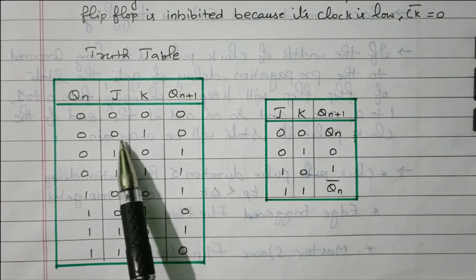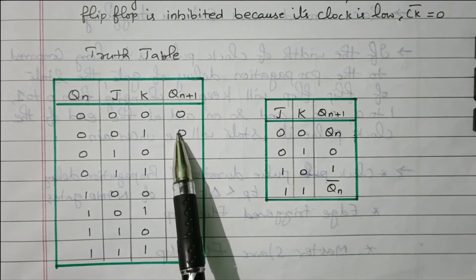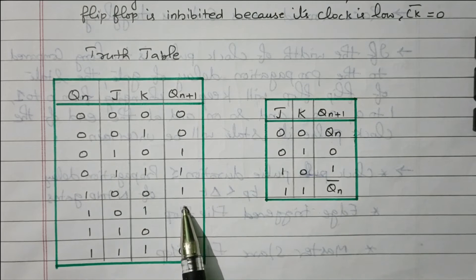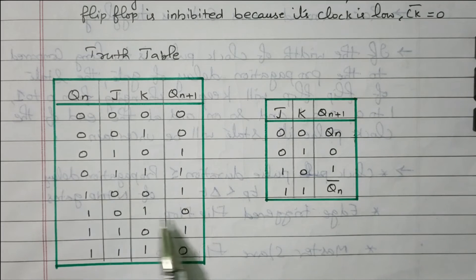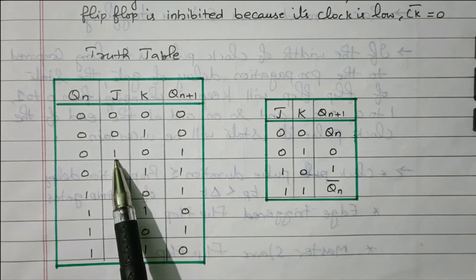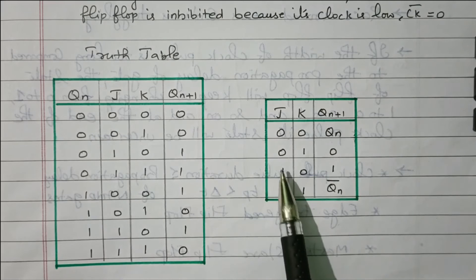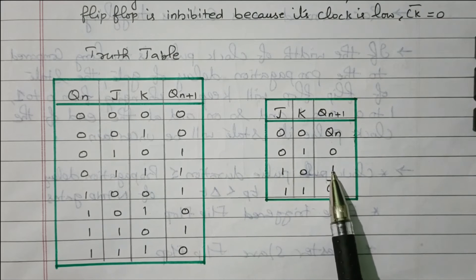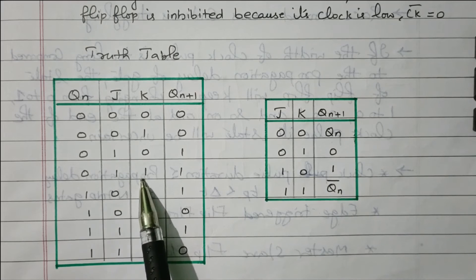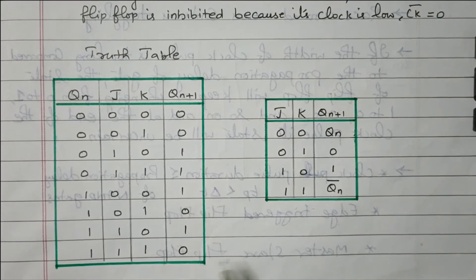When J is 0 and K is 1, it is the Reset condition. Reset means the output becomes 0. Whatever the previous state may be — whether it is 0 or 1 — the next state becomes 0. When J is 1 and K is 0, it is the Set condition. It will set the output to 1: whether the previous state is 0 or 1, the output is 1. When both J and K are 1, it is Toggle: if the previous state is 0, the next state will be 1; if the previous state is 1, the next state will be 0 — that is QN-bar.